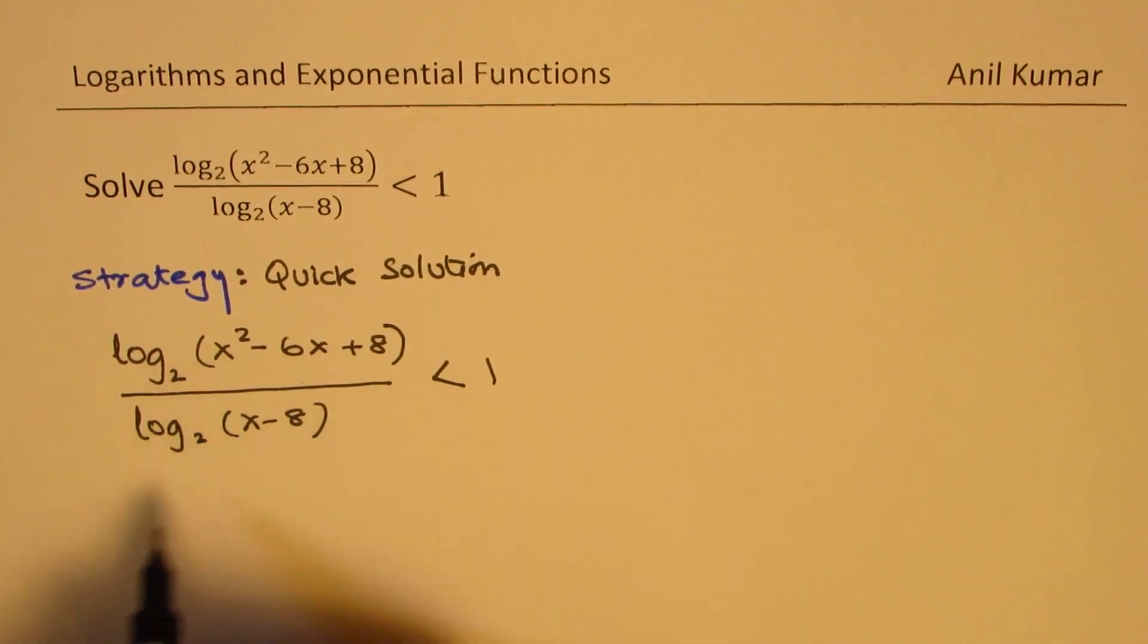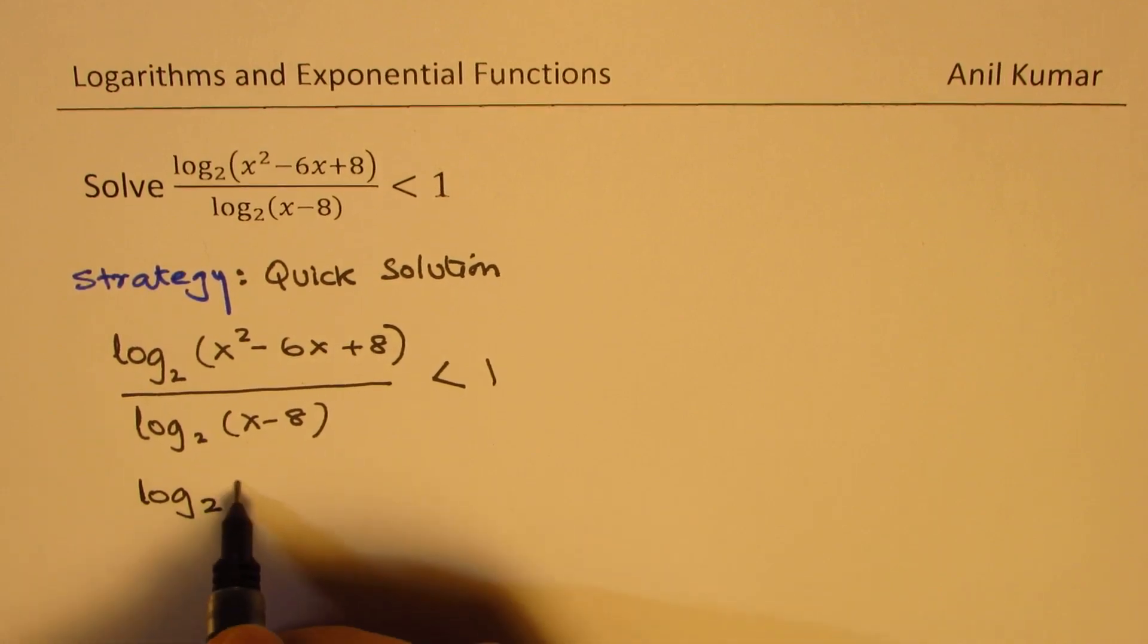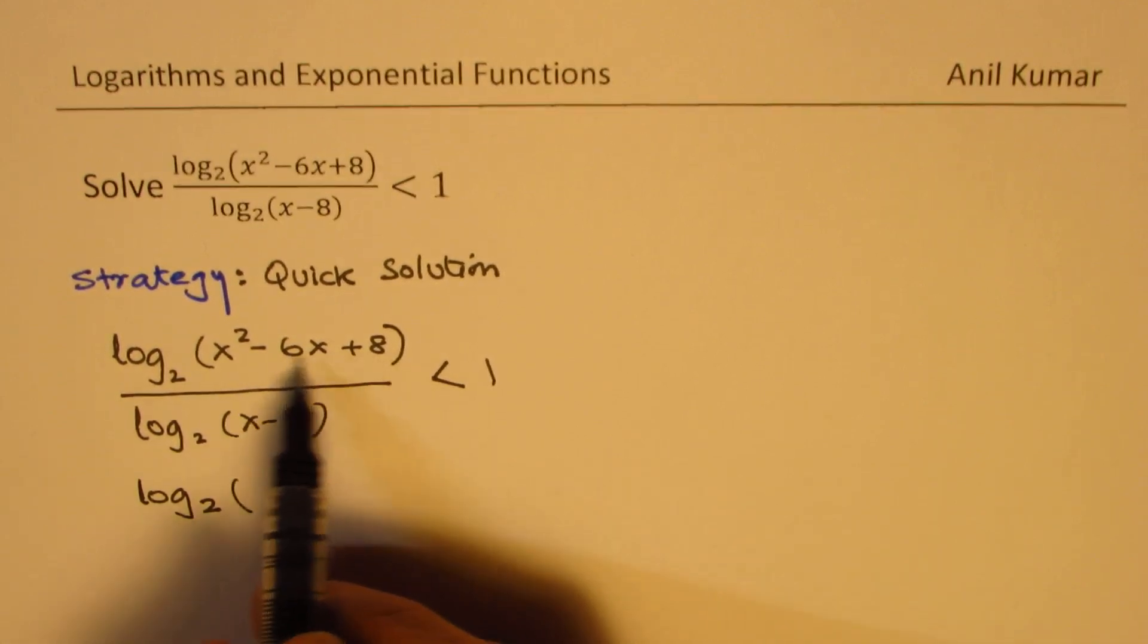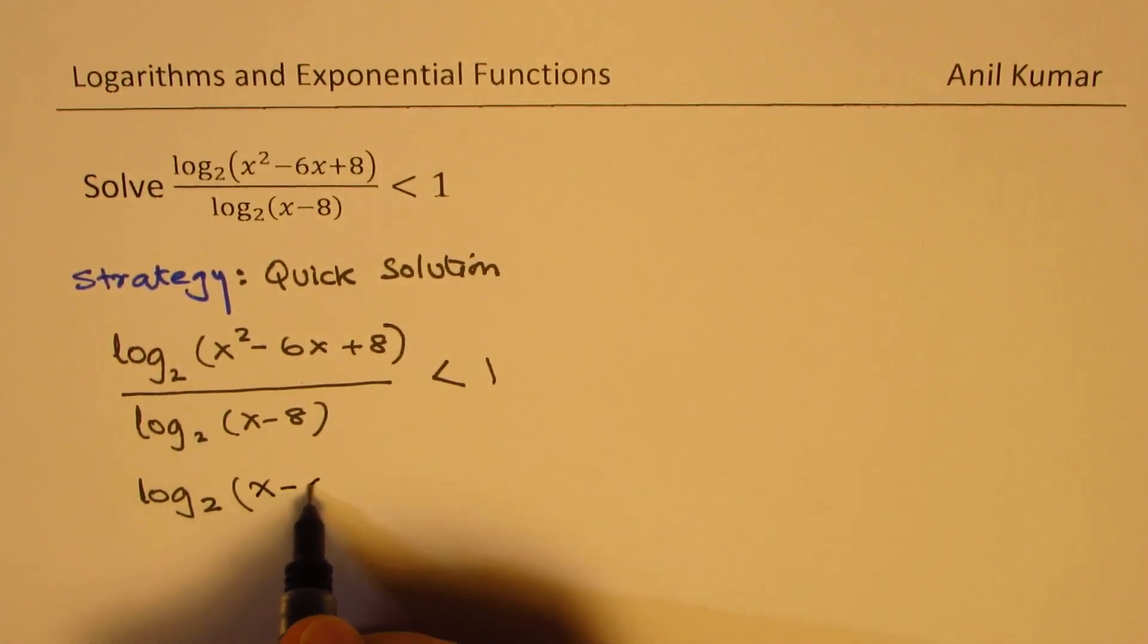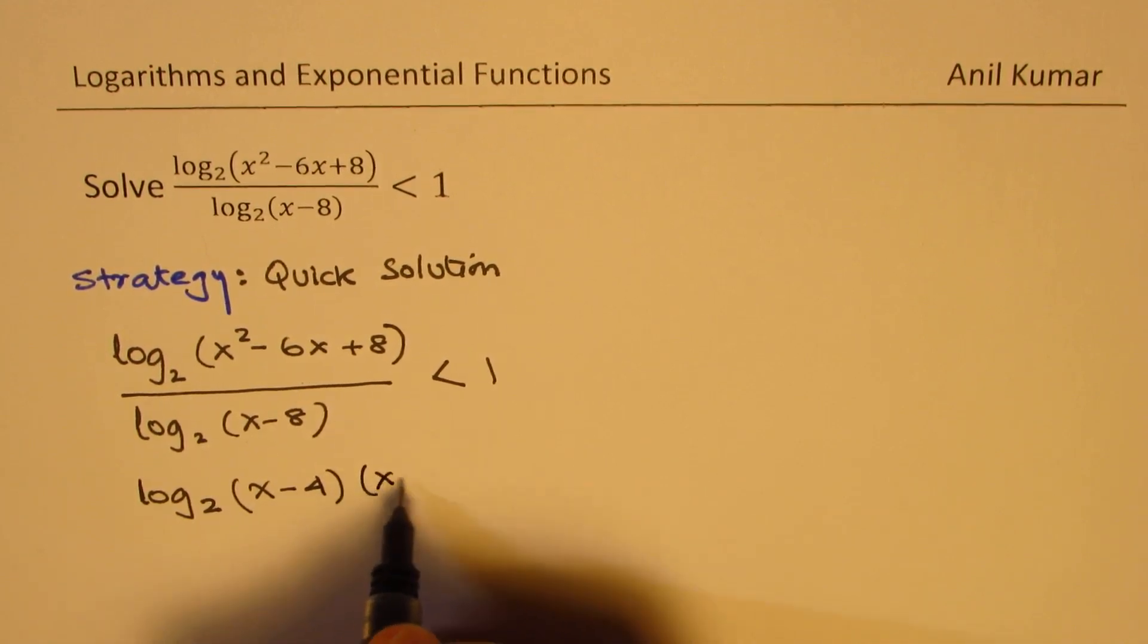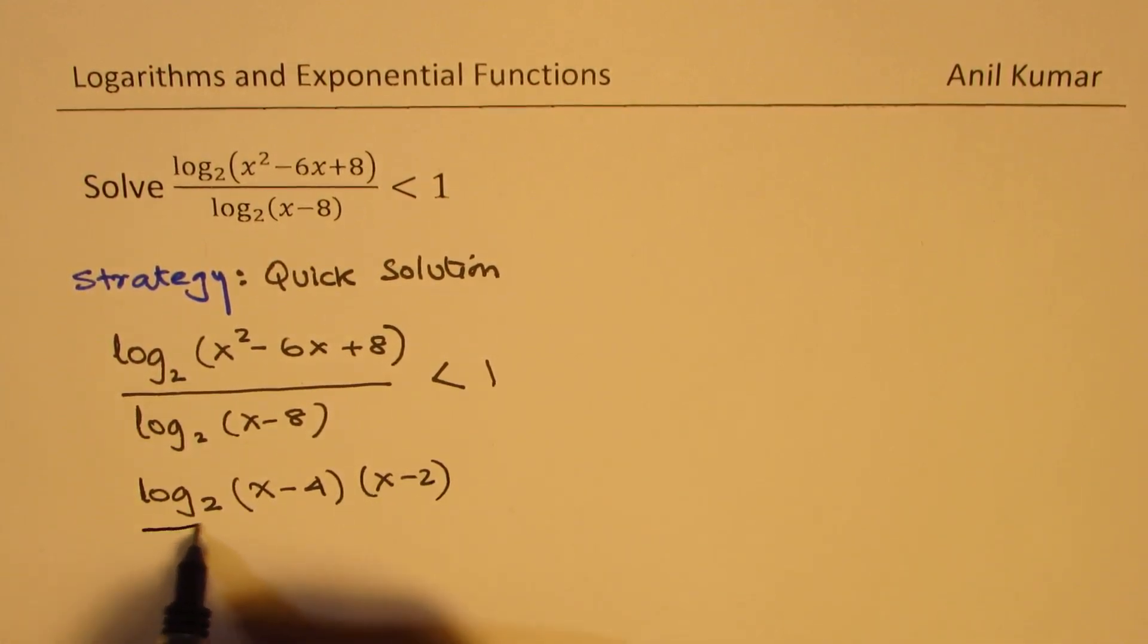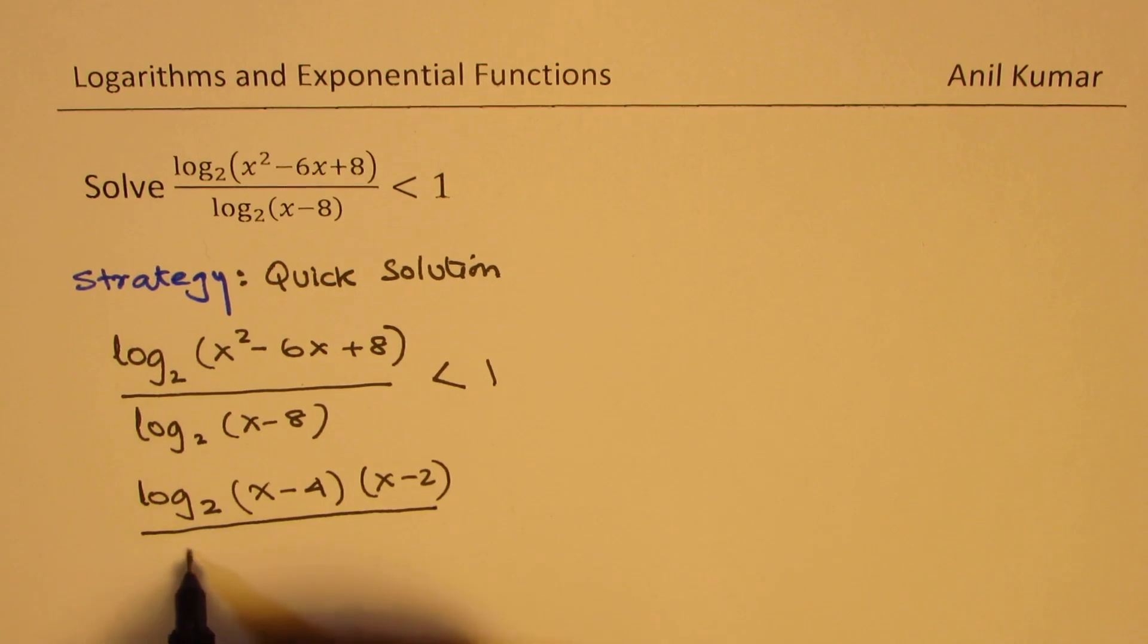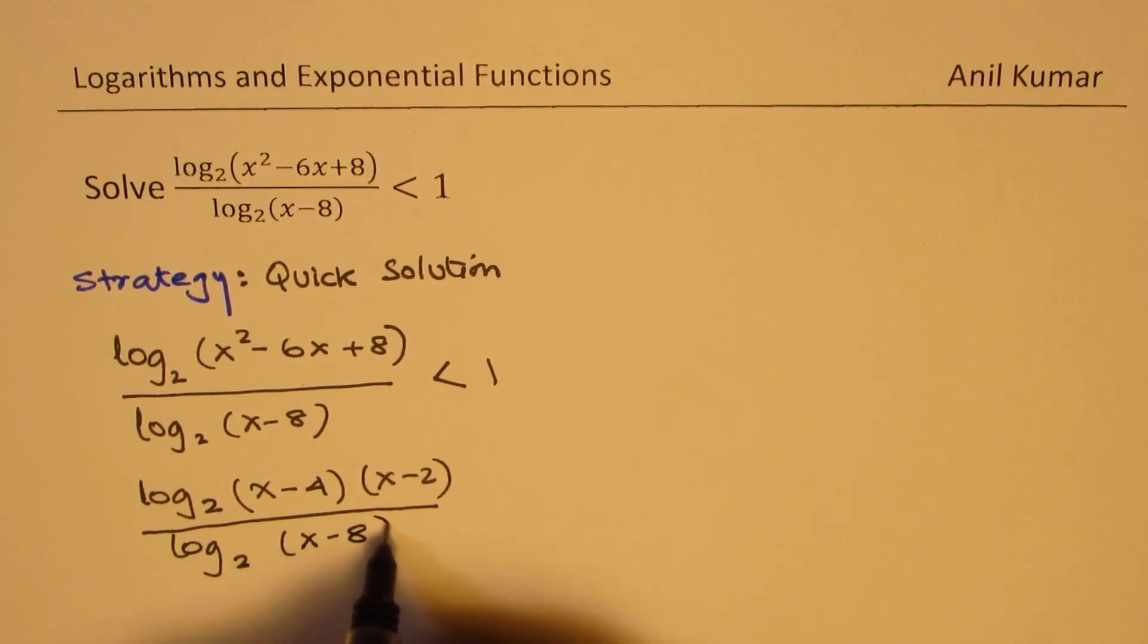We can factor the numerator. We can write this as log base 2 of (x - 4)(x - 2) over log base 2 of (x - 8) less than 1. So that's what you get.